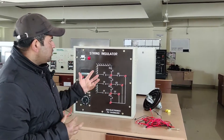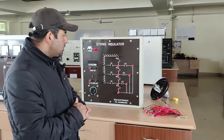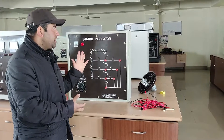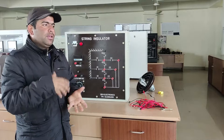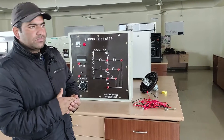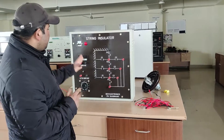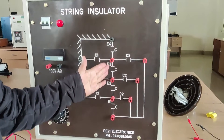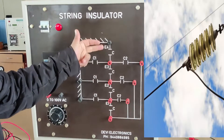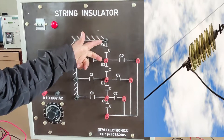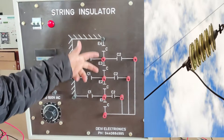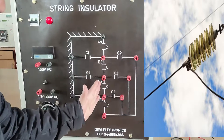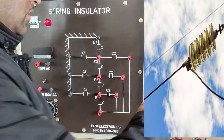We have a small kit that will demonstrate how we can check the efficiency of a given string and how we can improve it. If we look at this setup, you can see the basic circuit diagram representing the given string. Instead of insulator discs, we have capacitors here — one capacitor, another, another, and another. This represents our string.